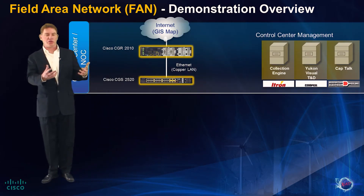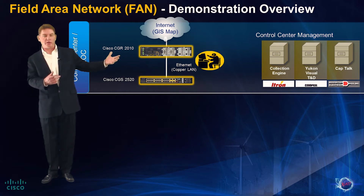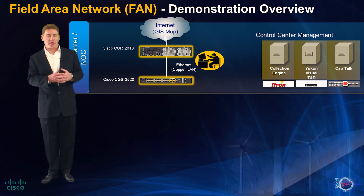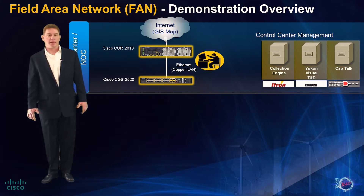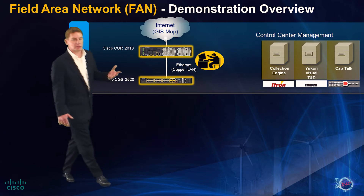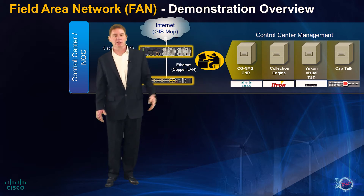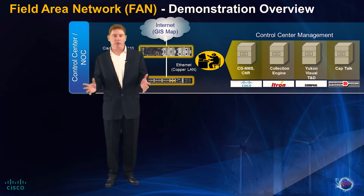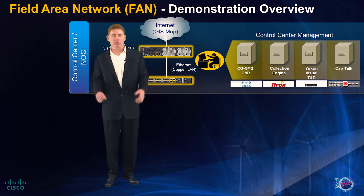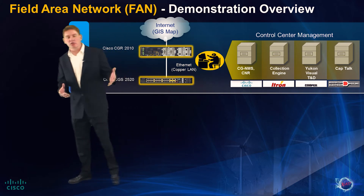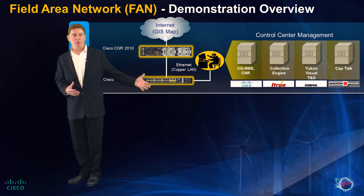Utilities depend on different applications to monitor and control the grid, and these applications are hosted and managed in the control center NOC operation center. In the demo there are three utility-specific applications dealing with smart meter operations and distribution automation. In conjunction with utility-specific applications, there are network management applications from Cisco, like the Cisco Connected Grid Network Management System. CGNMS provides visibility into thousands of connected grid routers and millions of smart meters, with functions such as secure zero-touch deployment, configuration management, image management, and more. All of these applications are available through the connection to the Cisco CGS2520 ruggedized Ethernet switch.